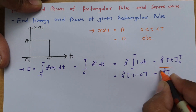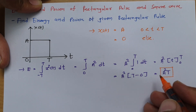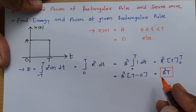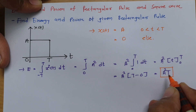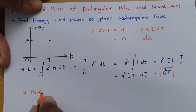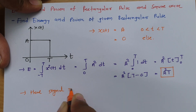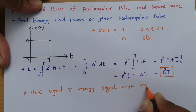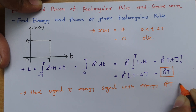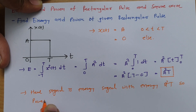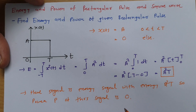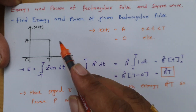So the energy of the signal is A²T. Whenever energy is finite, the power of that signal will be 0. So the signal is an energy signal with energy A²T, and power P = 0. This is how we calculate energy and power of a rectangular pulse.